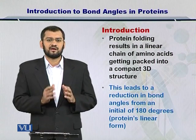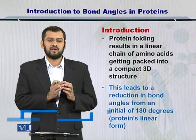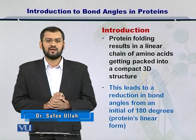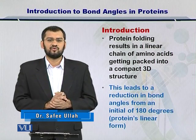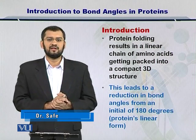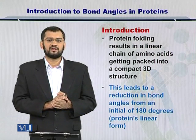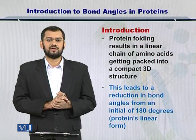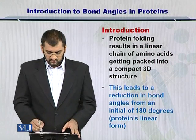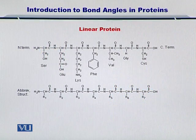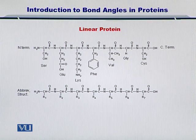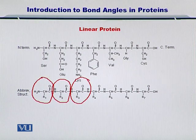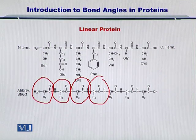Each amino acid comes together with the other amino acid in order to make a linear chain. This chain, if you imagine it linearly, then every amino acid is connected to the other amino acid at an angle of 180 degrees. I will show you an example. If you look at this protein, it is in its linear form and all the amino acids that constitute this protein, as shown here, they are linearly combining with each other in order to make a protein.